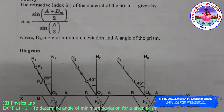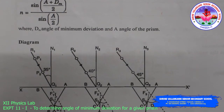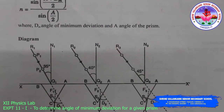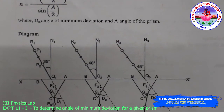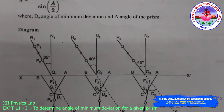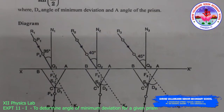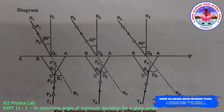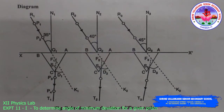See the diagrammatical representation. We are going to perform this activity on the A4 sheet with the help of the prism for various angles of incidence, and we will get various angles of deviation.